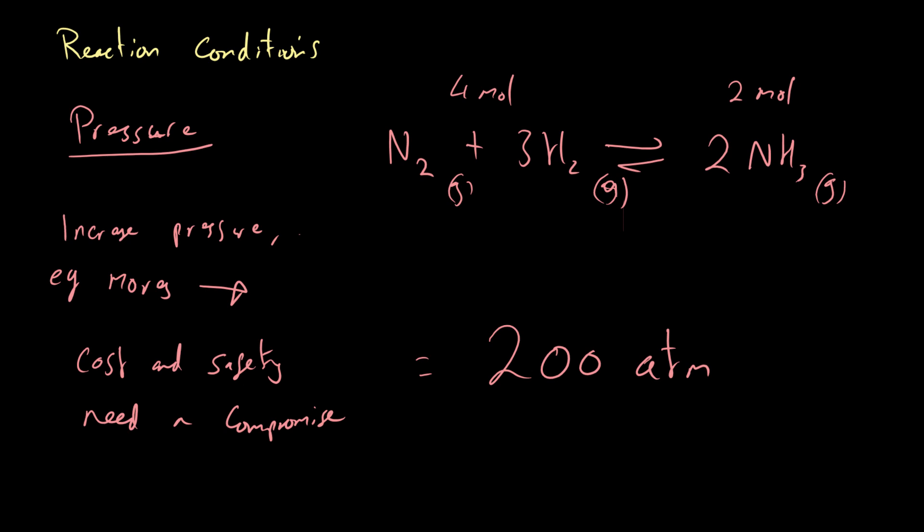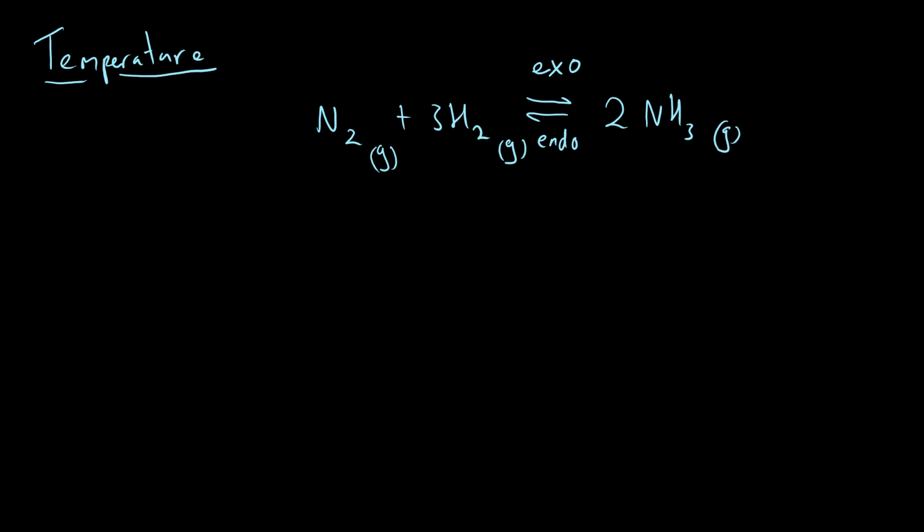Now next we're going to look at temperature. This is slightly more complicated. Above the forward arrow I've written 'exo' and below the backwards arrow 'endo' - that's because the forward reaction when we produce ammonia is exothermic, and the backwards reaction is endothermic. Now this provides a problem. If temperature is increased, equilibrium moves to reduce that change, which is to the left, because an endothermic reaction will take in heat and decrease the temperature. So if we carry out this reaction at really high temperatures, the amount of ammonia we produce is going to go down because we're moving the equilibrium to the left.